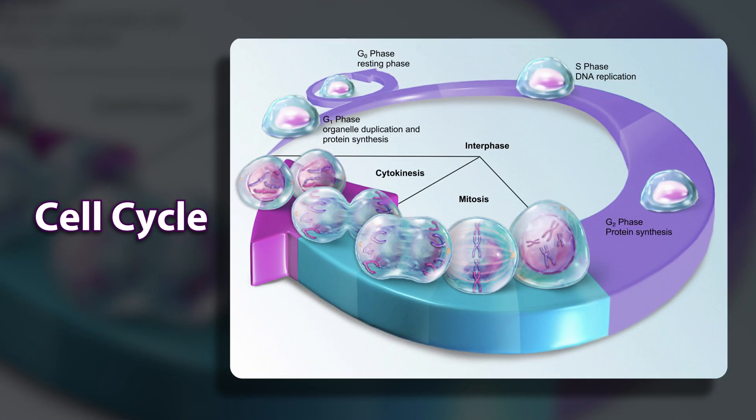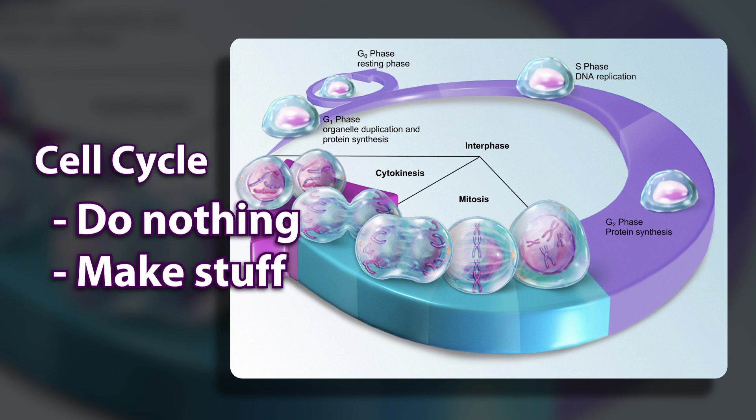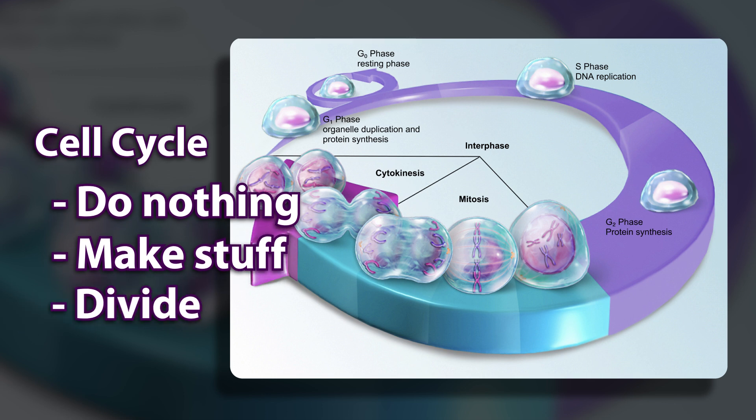Unless you're a single-celled organism, you need to make more cells. How do cells do that? Let's take a look at the life of a cell, which is made of a series of phases called the cell cycle. During the cell cycle, cells can do nothing, make stuff, or divide.